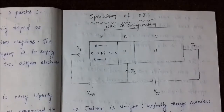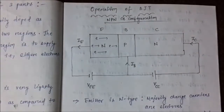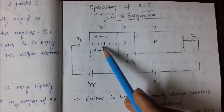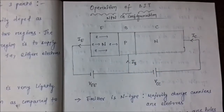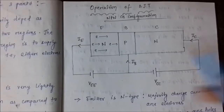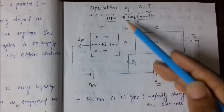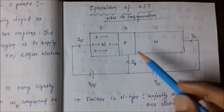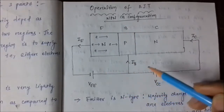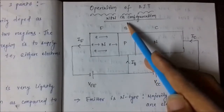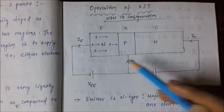Now we will discuss the operation of the BJT and how current flow takes place. Here we have the emitter, base, and collector. The emitter is N-type, the base is P-type, and the collector is N-type. An important property of a bipolar junction transistor is that in the common base configuration — where the base terminal is common to both sides — we can also have common emitter and common collector configurations.